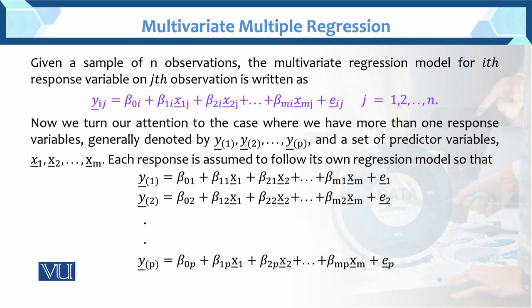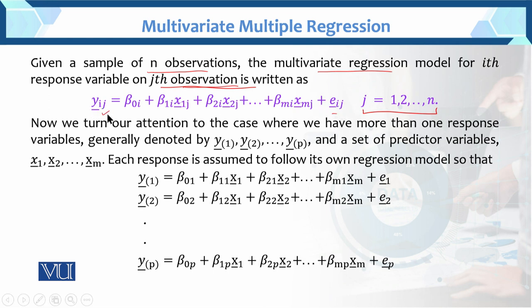Given a sample of N observations, each model has N observations — blood glucose has N, weight has N observations, and cholesterol also has N observations. The multivariate regression model for the i-th response on the j-th observation is written as y_ij, where j varies 1 to N. So it is beta_0i + beta_1i*x1j + ... with the independent variables x coming as vectors and the dependent variable y_ij also in vector form.